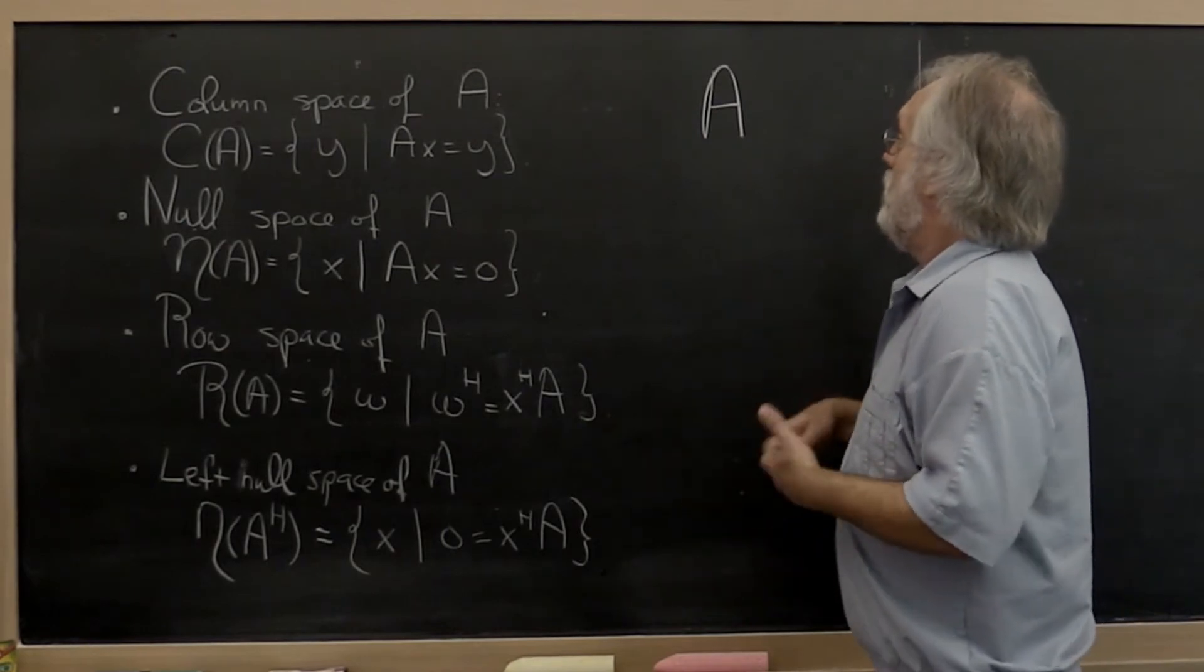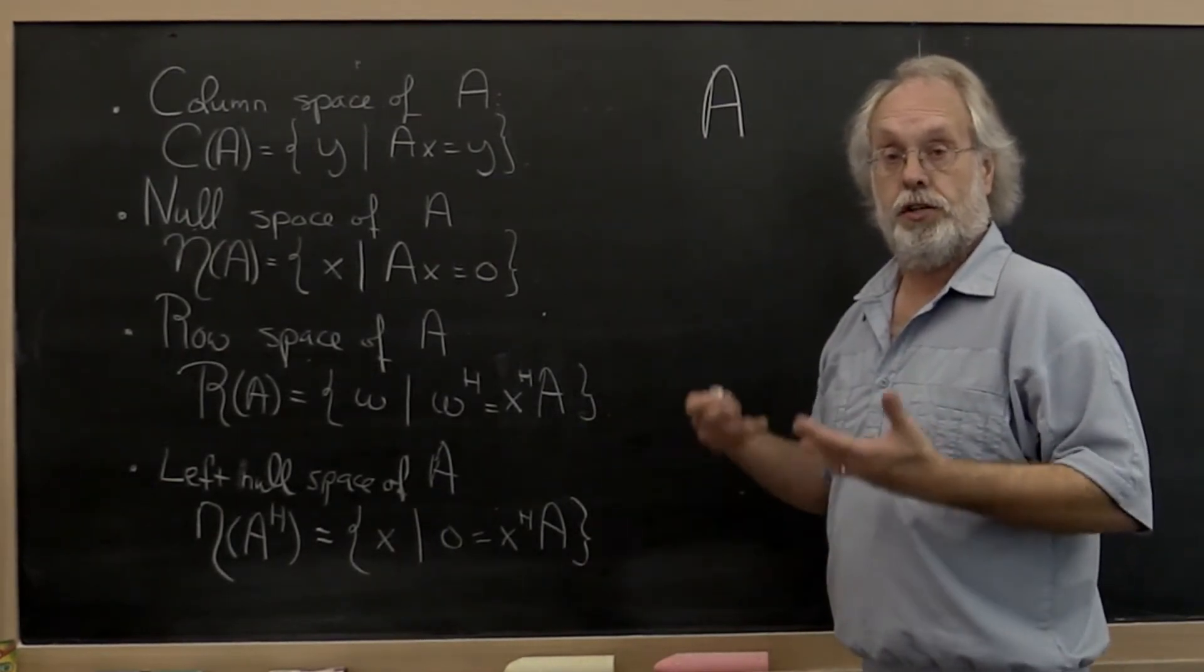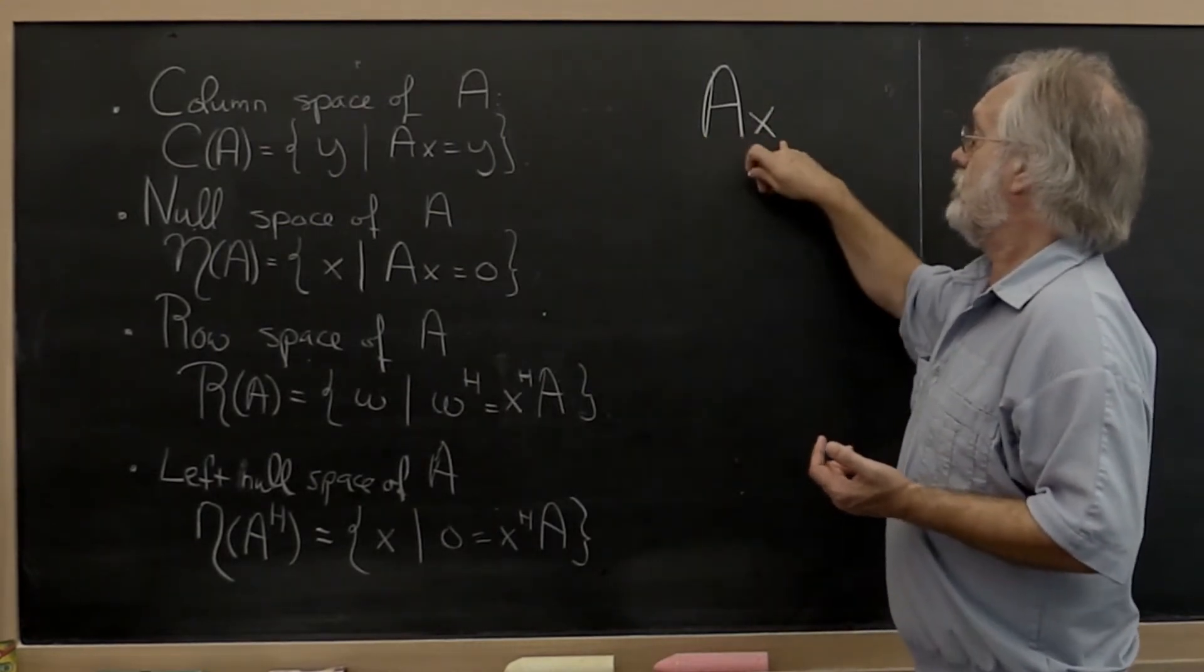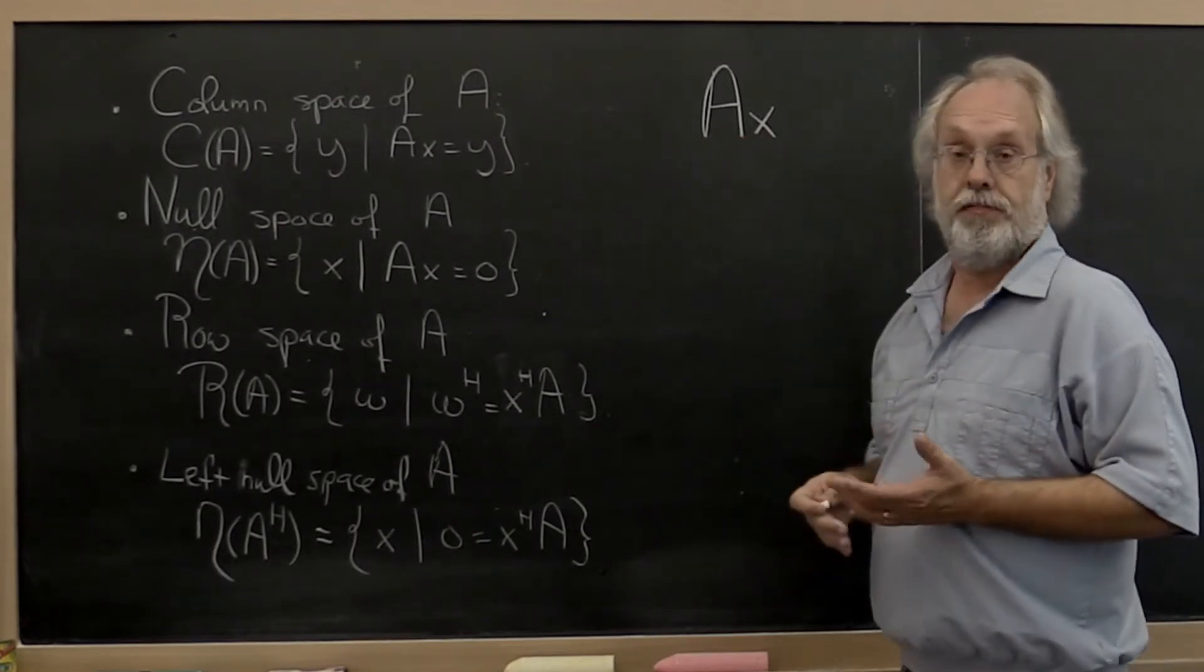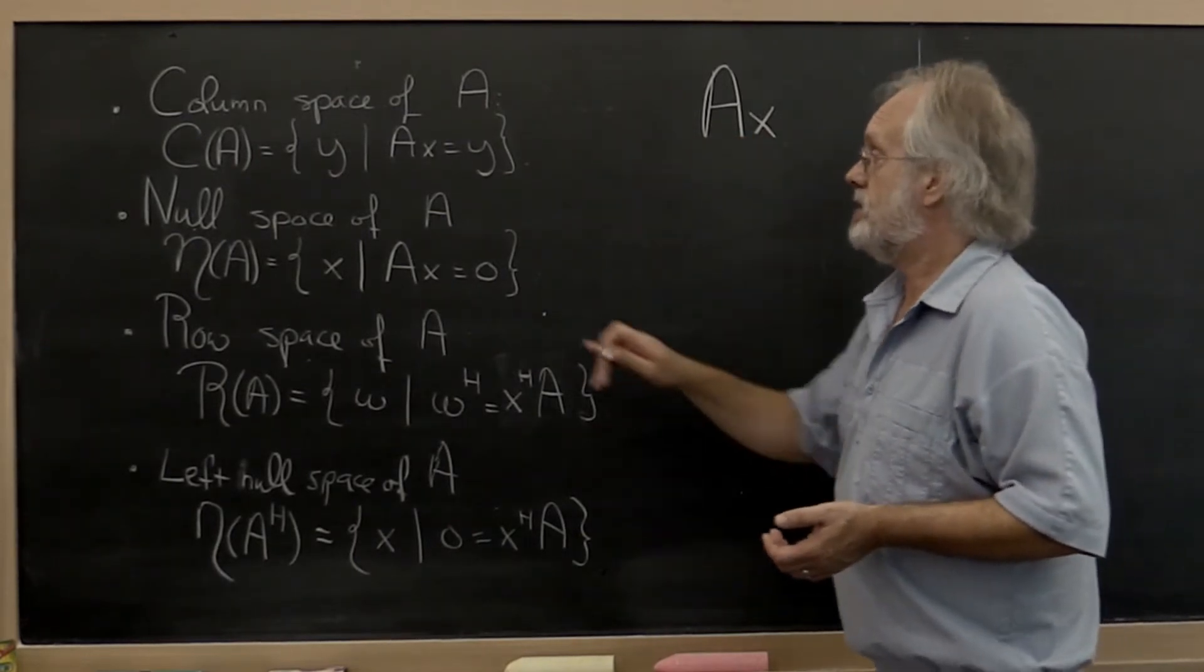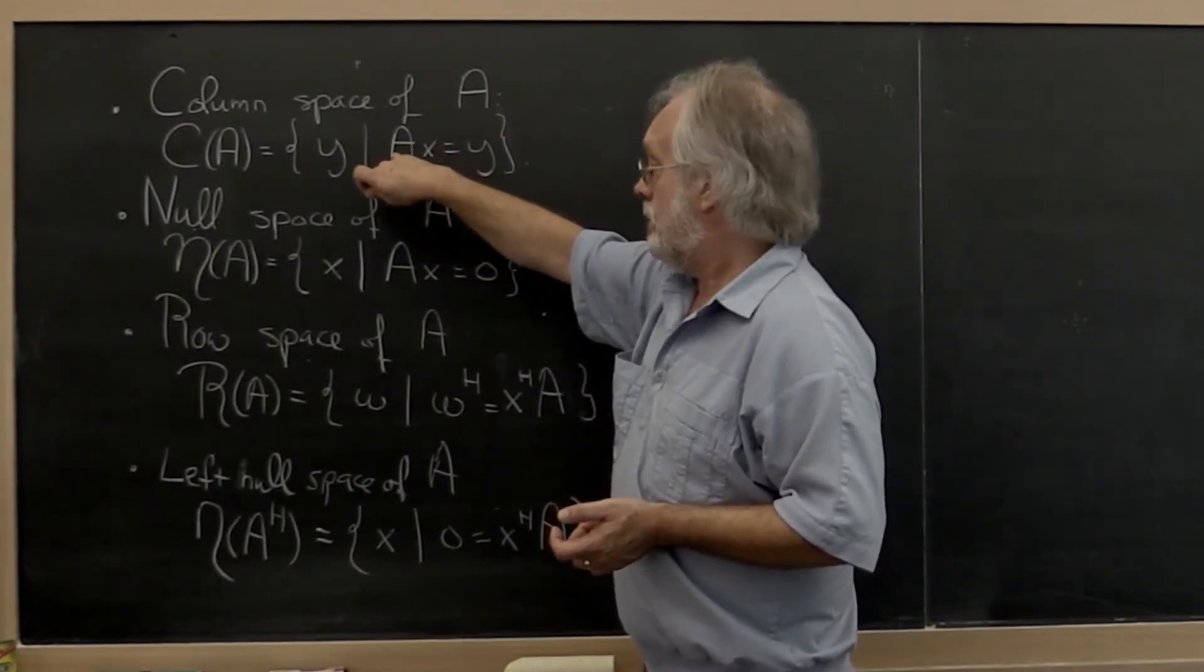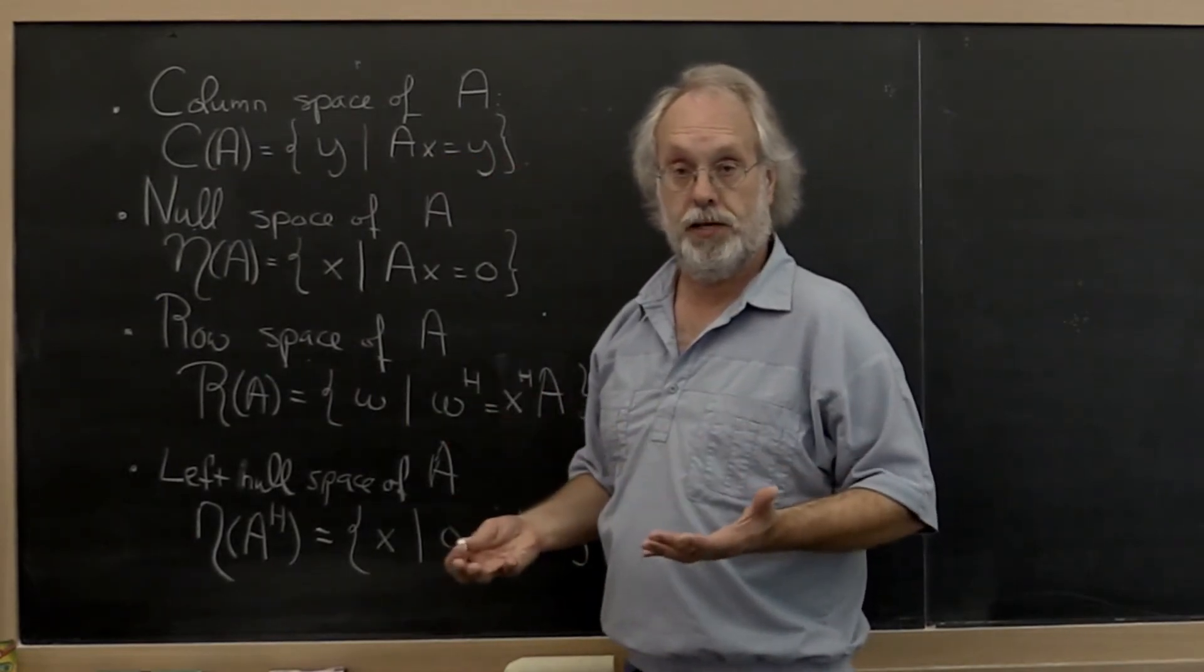And of course vectors that can be created as linear combinations of the columns of A can be identified as all vectors that you can create by doing A times some vector x. Okay, so it's the set of all vectors y such that there exists an x where A times x is equal to y. That's the column space.